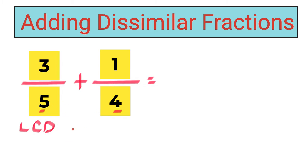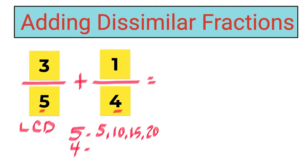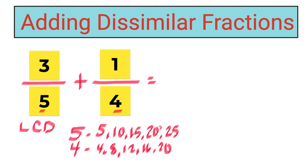We need to get the LCD of five and four. By doing that, we can use skip counting. For five: five, ten, fifteen, twenty, twenty-five — and the numbers are infinite. For four: four, eight, twelve, sixteen, twenty. Now take a look — is there any common number? Yes, and that is twenty. So the LCD of five and four is twenty.